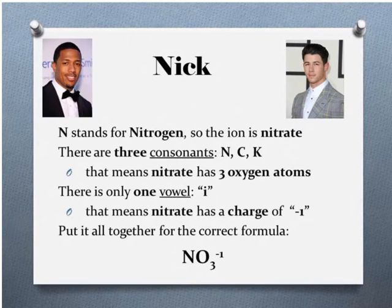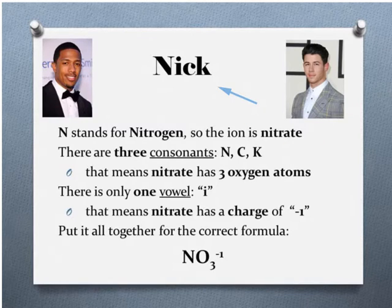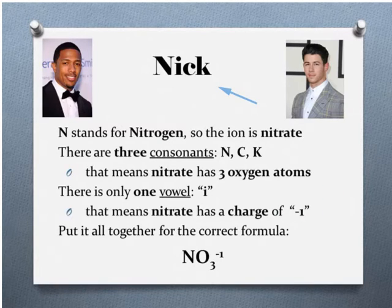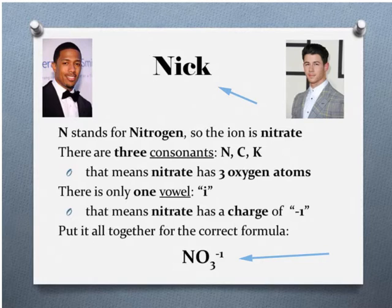We'll start with the first word: Nick. The N stands for nitrogen, so the ion we're concerned with is the nitrate ion. There are three consonants — N, C, and K — which means the nitrate ion has three oxygen atoms. There is only one vowel, the I, which means the nitrate ion has a charge of minus one. That gives us the formula NO3⁻¹, which is the correct formula for the nitrate ion.